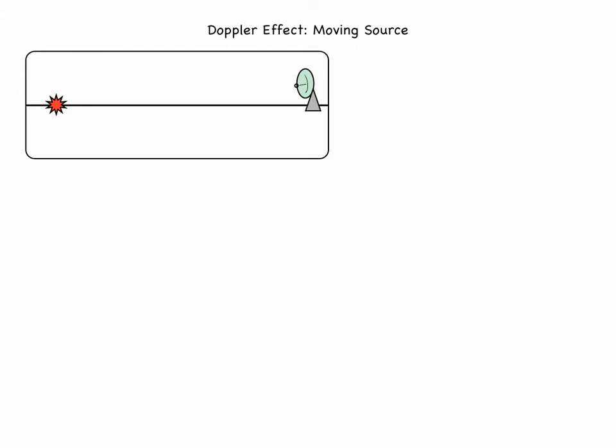We'll consider how the frequency of a sound wave received by a detector relates to the actual frequency emitted by the source. When both source and detector are stationary, the emitted and received frequency are equal. When the source and the detector move relative to each other, there is a shift or a change in the frequency that the detector receives. This is known as the Doppler effect, and we will consider the effect in the case of a moving source.